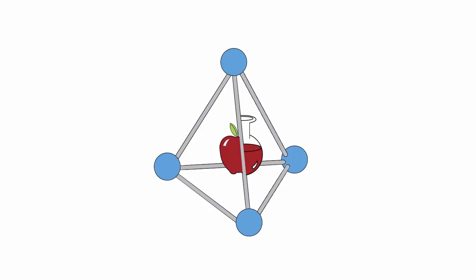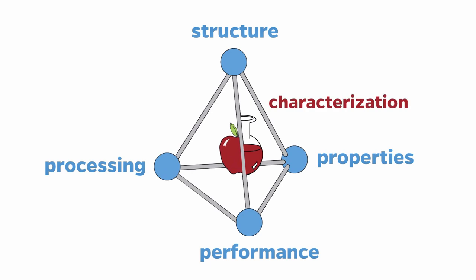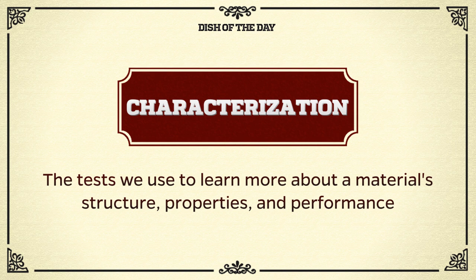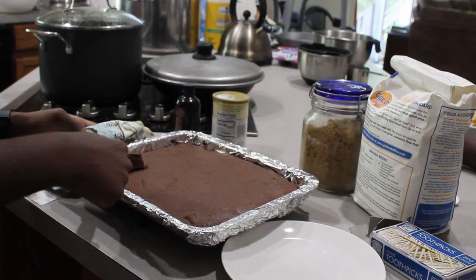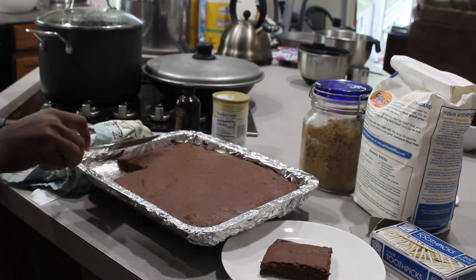Now, let's see the fruits of our labor. Did we meet all of our constraints and satisfy our team members? To find out, we have to characterize these brownies. Characterization — the center of the material science tetrahedron — refers to the tests we use to probe a material in order to learn more about its structure and properties, and it tells us what processing steps we need to apply to improve that material's performance. In this case, characterization is the best part because it means eating the brownies.